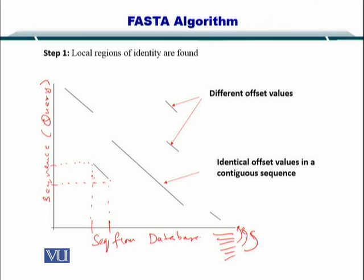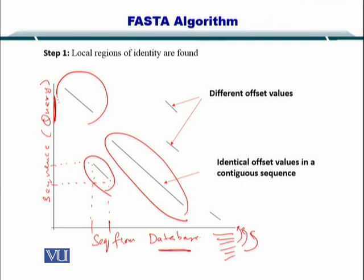So in this way, you can create a dot plot. And as you would remember that the dot plot helps you to find out all such diagonals between the database sequence and the query sequence. And here, all such sequences have been plotted for you as an example. So in all, there are six matches between the sequence from the database and the sequence that is given as a query.